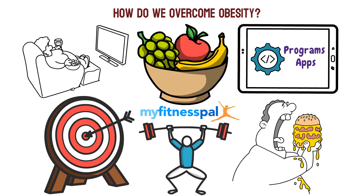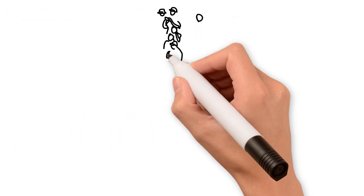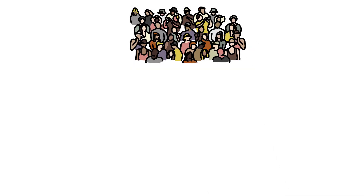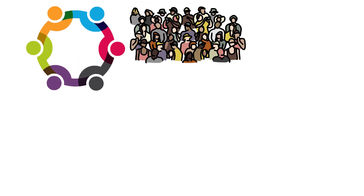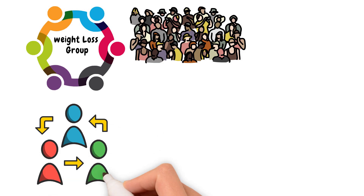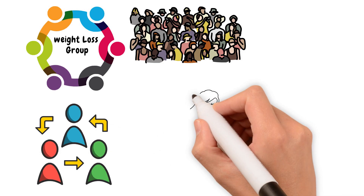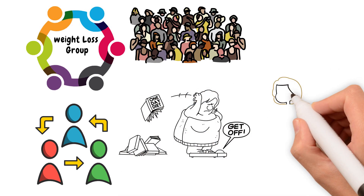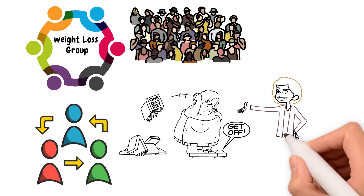Here's a little secret: obesity isn't something you have to overcome alone. There are plenty of people who are willing to help and support you on your journey. You can join a support group, like a weight loss group online community. This way, you get to connect with others who are facing similar challenges, and share tips and resources. No matter what route you choose, remember that making even small changes can have a big impact on your health. Obesity prevention is possible, and it starts with you.